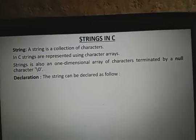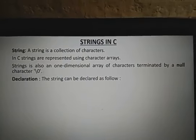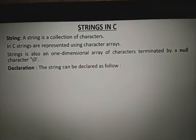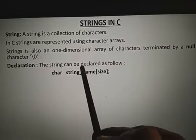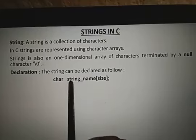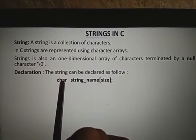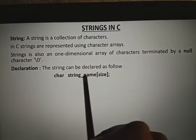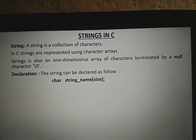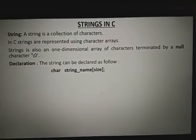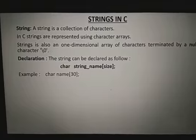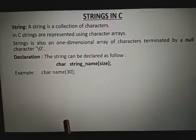How to declare a string? Strings are declared the same as a normal array declaration, but the array type is character type. The syntax is: char string_name[size]. For example, char name[30] means in that name I can store a maximum of 30 characters in length.